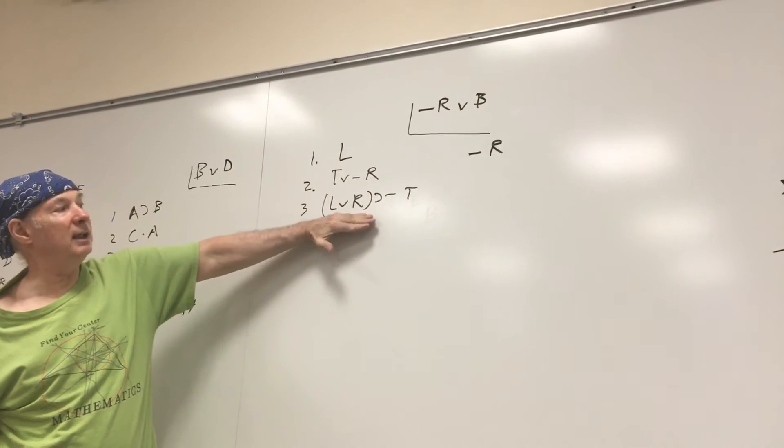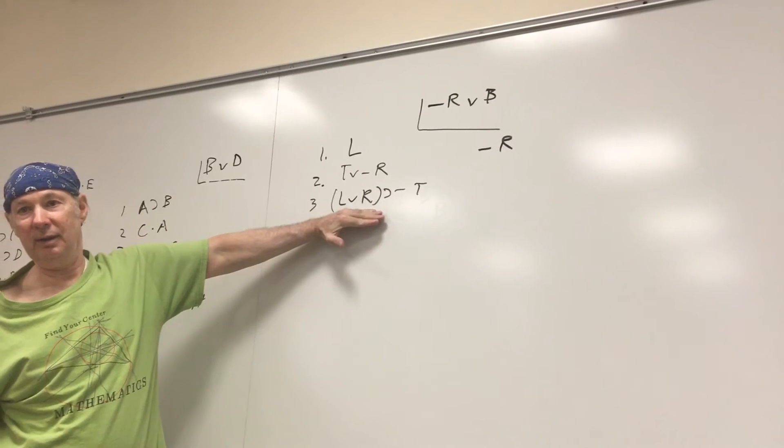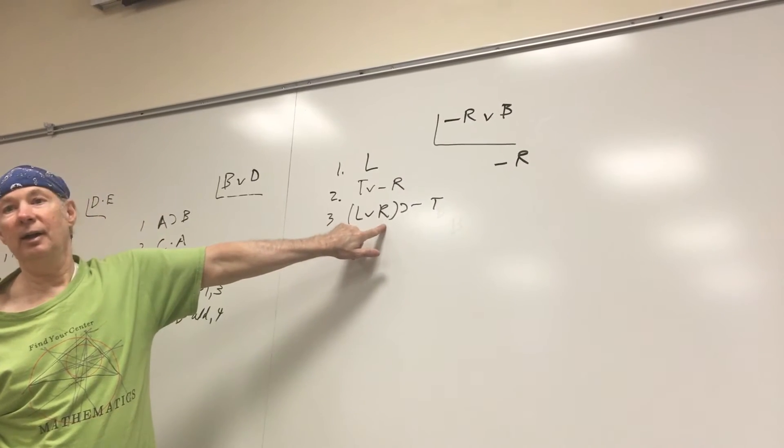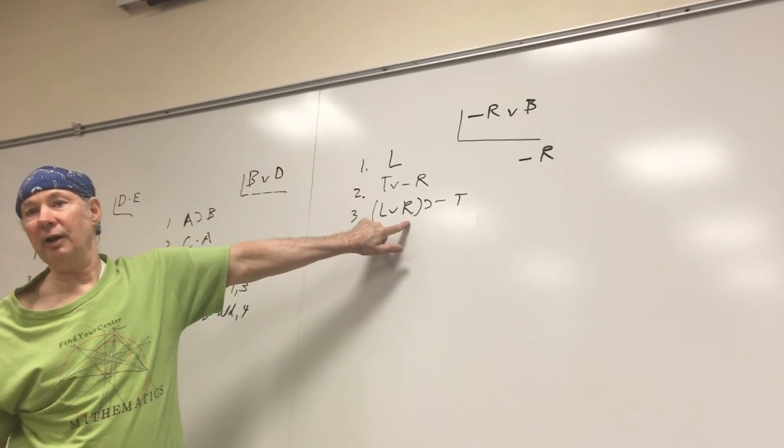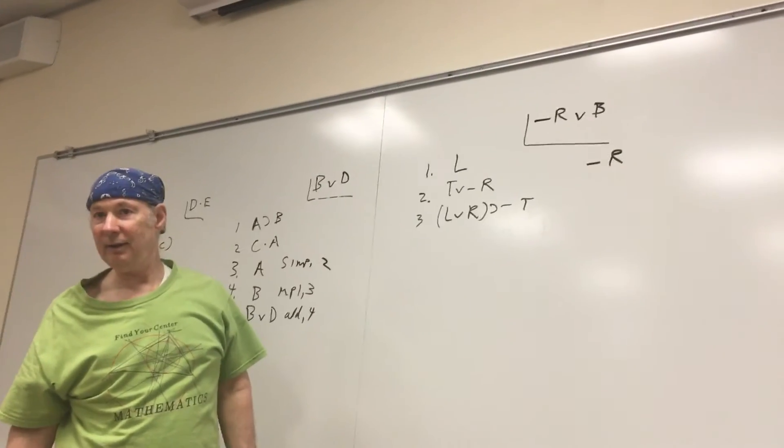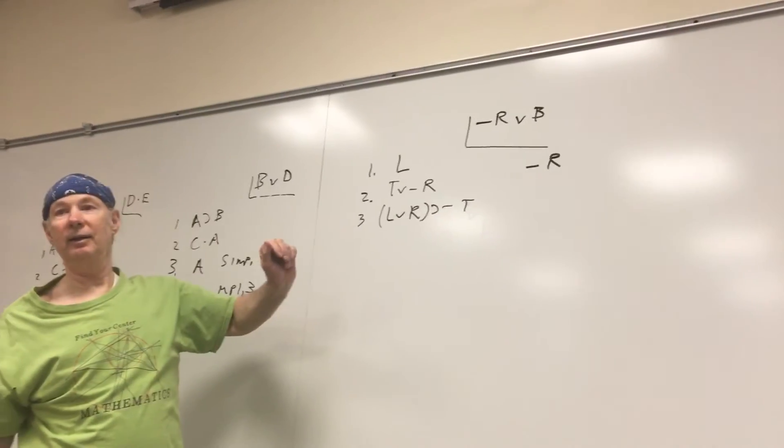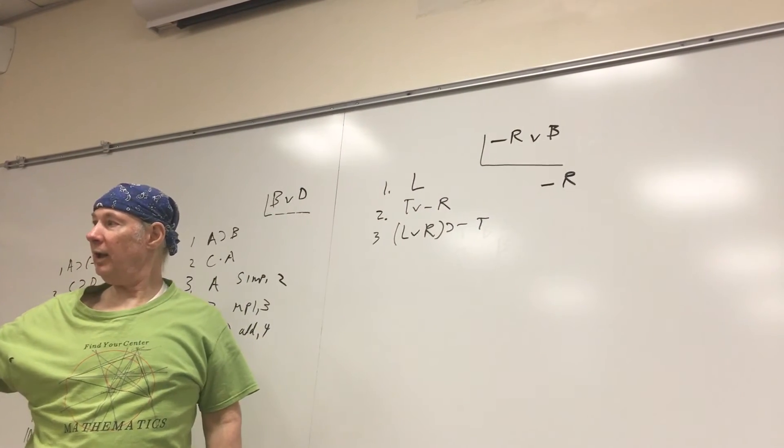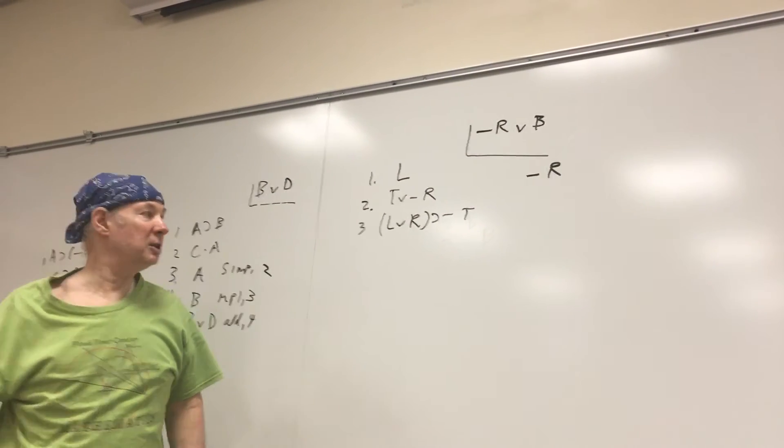What else do I need to do MP besides this horseshoe? I need L wedge R. Do you see L wedge R? Do you see L? Yes. What line? One. Okay. With L, we can now wedge R by addition.